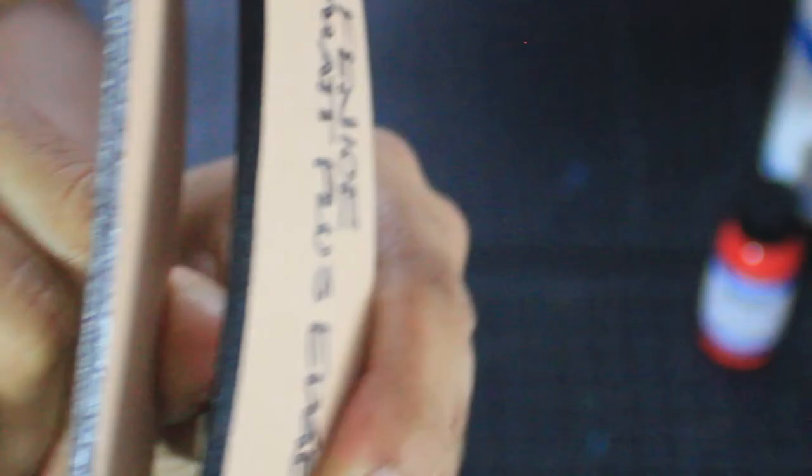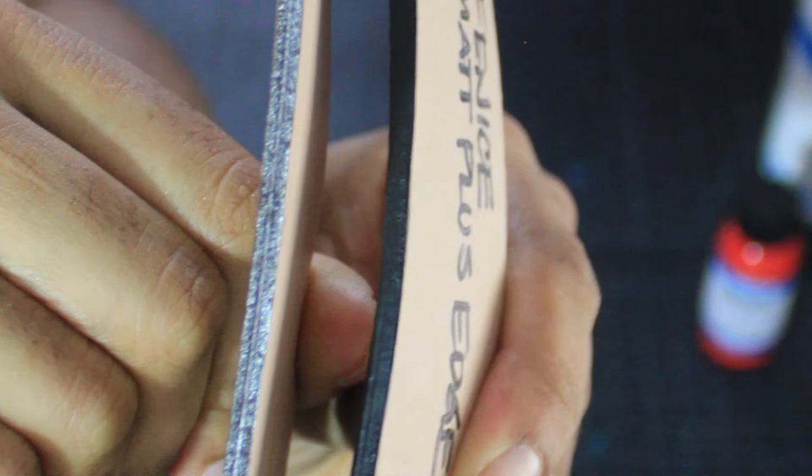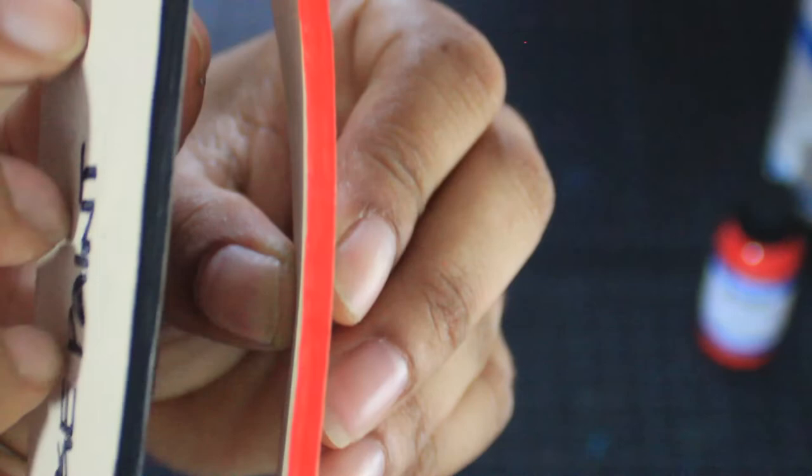Lastly, let me just show you a side-by-side comparison. So this is the Fiebing's with the Fenice. So this is the Fenice with the Giardini. If you look at these two, the difference is very, very slight but it is noticeable. The Giardini just fills in the gaps a little bit better than the Fenice.